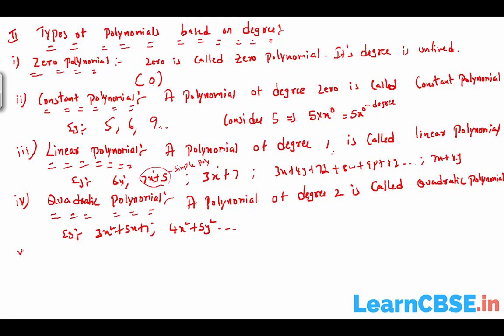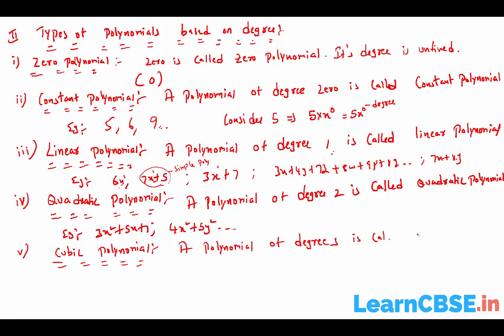The fifth type is cubic polynomial. A polynomial of degree 3 is called a cubic polynomial. For example: expressions like 6x³ + 7. It may have a single variable or multiple variables, like linear and quadratic polynomials, but the degree of the expression must equal 3. Then it is called a cubic polynomial.